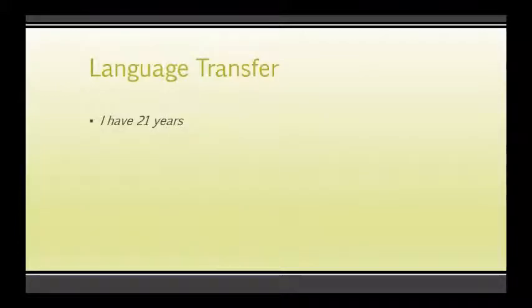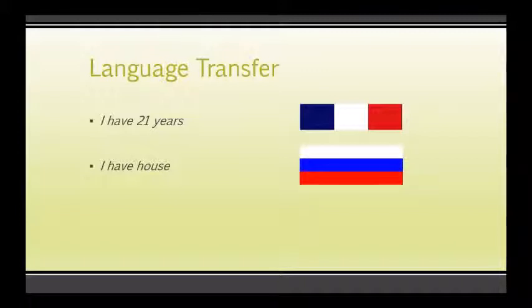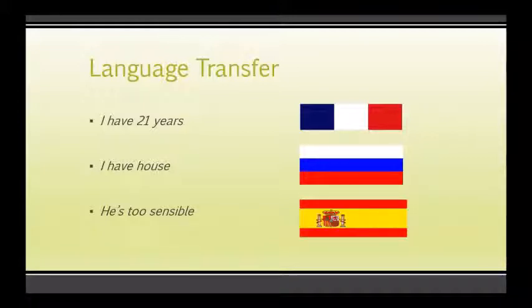Let's have a look at a couple of examples. This is basic language transfer — something we're all very familiar with. 'I have 21 years' — a direct translation from French using 'avoir'. 'I have house' — the article is missing, typical of Russian or Polish speakers since there are no articles in Russian. 'He's too sensible' — this may or may not be a problem. It's a false friend between 'sensible' and 'sensitive' in Spanish. So we're all very aware of what's happening with direct language transfer, but there's also pragmatic transfer — where a speaker transfers a strategy they use in their own language to achieve something in the second language.